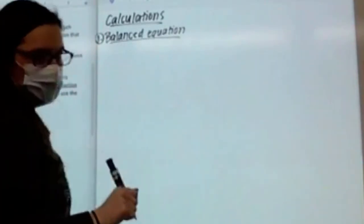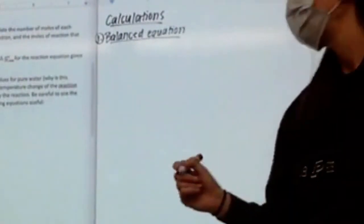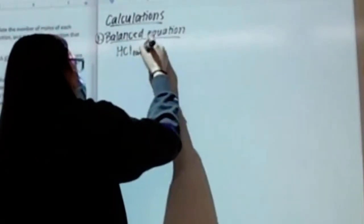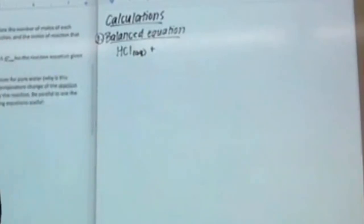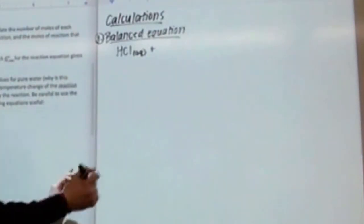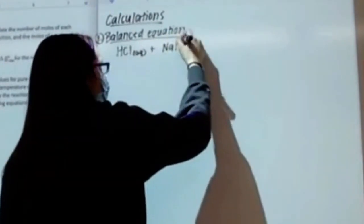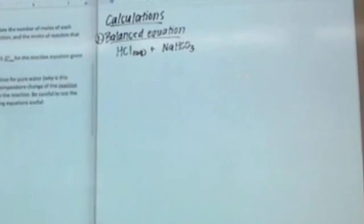For this equation, if we think about what we had — we had HCl. Remember, acids are always aqueous, so we had aqueous hydrochloric acid. And then we had baking soda. Baking soda is sodium hydrogen carbonate, or sodium bicarbonate, NaHCO3. What state of matter was the baking soda? Solid.